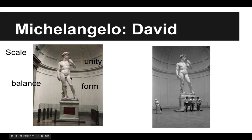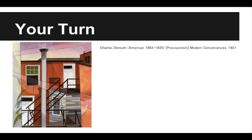As opposed to, for example, if he had a giant foot coming way out, or one hand that was really, really large — that would be a manipulation of form. All right, so we're going to look at another piece.